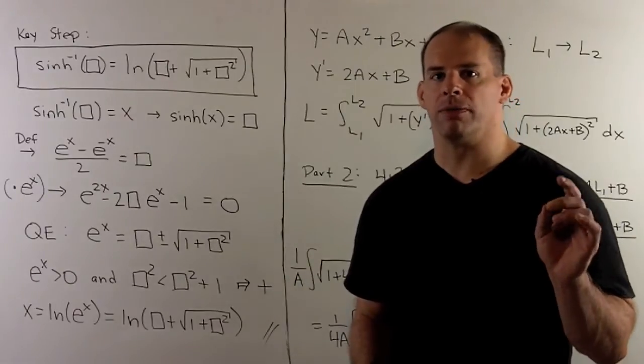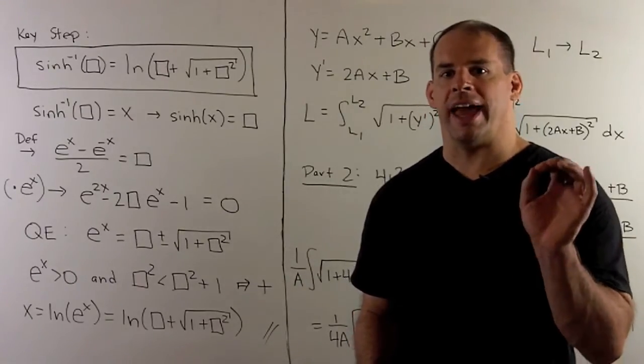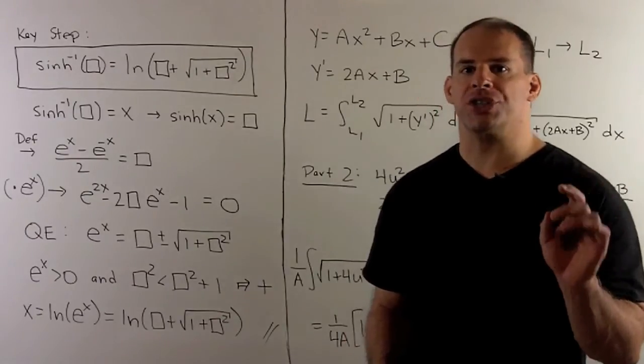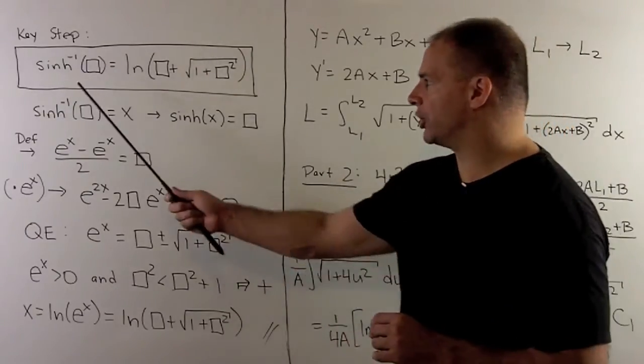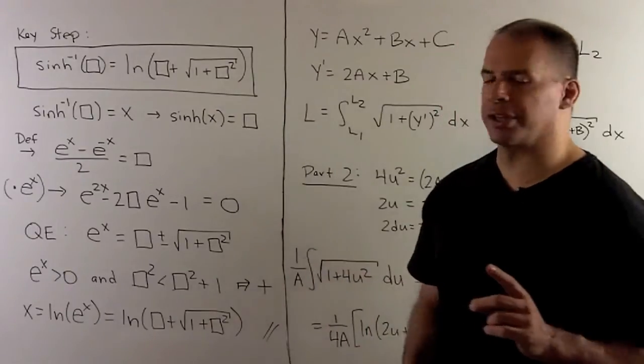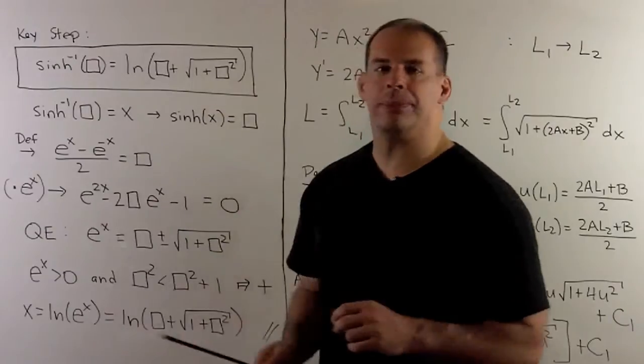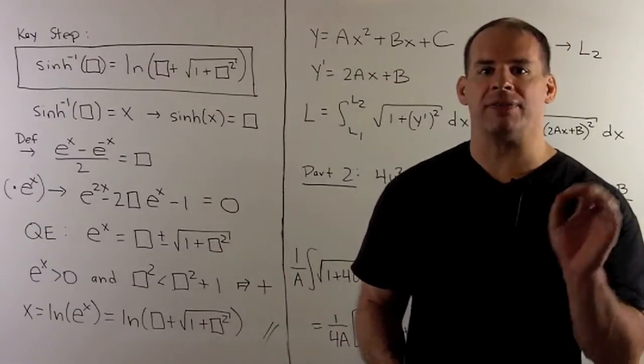Now, we want to show the general formula. I'm going to take the antiderivative from parts one and two. Replace the inverse sinh with this expression here. So, let's show this first. Now, if I have inverse sinh of box, if I want to unwind this, I have to give it a name. So, let's call it x.